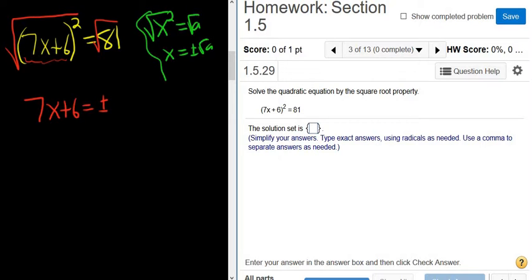The square root of 81 is 9. So now we subtract 6 from both sides.